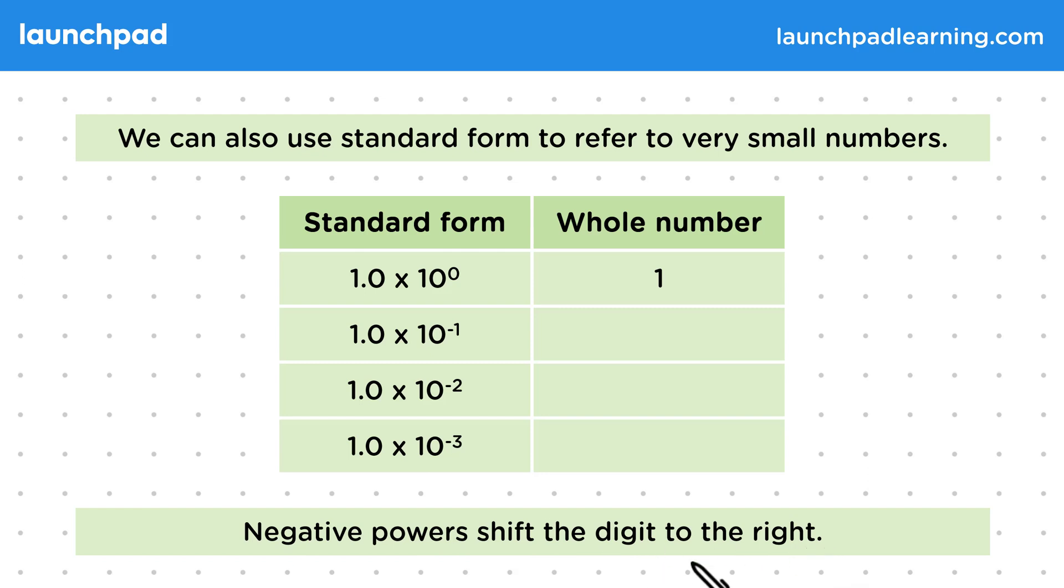So let's have a look at what we mean by shifting the digit to the right. We know that 1 times 10 to the power of 0 is 1. And 1 times 10 to the power of minus 1 is 0.1. We've shifted our 1 over to the right. 1 times 10 to the power of minus 2 is equal to 0.01. And 1 times 10 to the power of minus 3 is equal to 0.001. As the power of 10 decreases by 1 each time, the value gets 10 times smaller. In other words, we divide the value by 10.